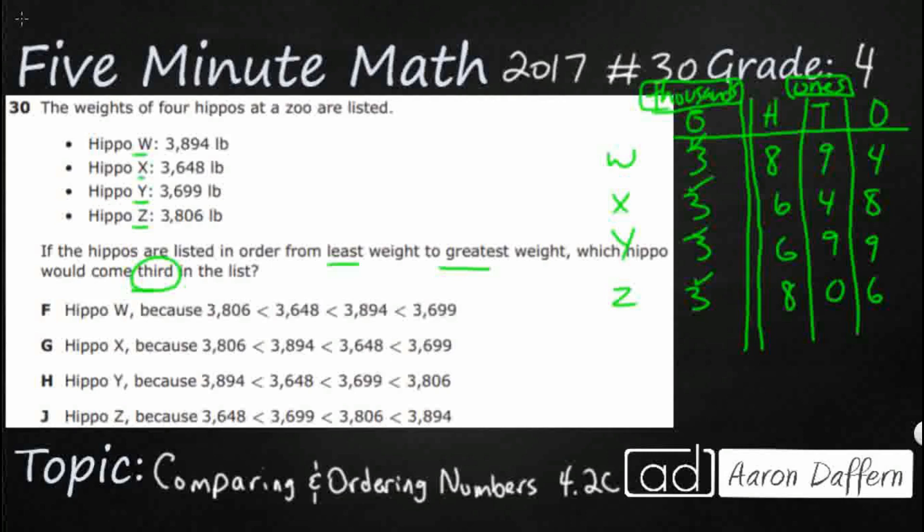Moving to the hundreds spot — I've got two numbers with sixes: X and Y both have a six in the hundreds, so either of them could be the smallest. I know it's not W and Z. That means I need to go to the next spot, the tens place. The four in X is smaller than the nine in Y. The zero in Z is smaller than both, but remember I'm only comparing X and Y since they both have a six in the hundreds spot.